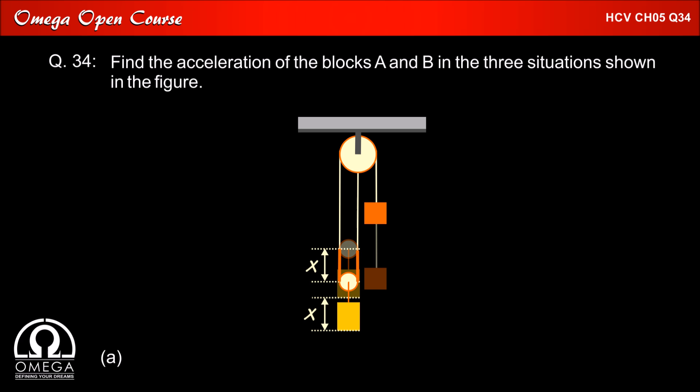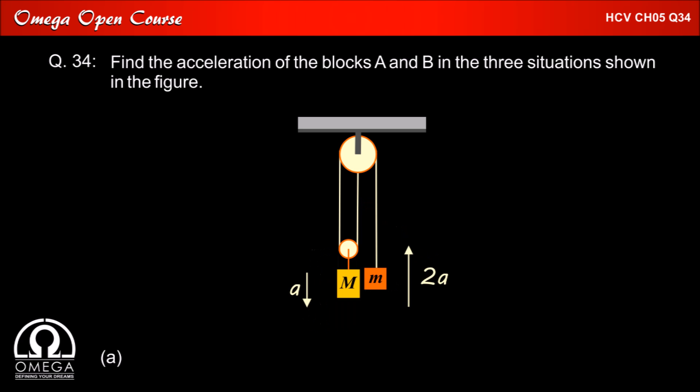That string can only be provided if block A moves up by that amount. So block A moves upward by distance 2X. Since block A moves twice the distance moved by block B in the same time, the acceleration of block A must be twice the acceleration of block B. So if we assume the acceleration of block B to be A in the downward direction, the acceleration of block A is 2A in the upward direction.